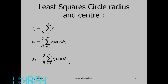The radius and center of the least squares circle are given by: r₀ = Σr_i / n; x₀ = (2/n)·Σr_i·cosθ_i; y₀ = (2/n)·Σr_i·sinθ_i. These are the equations to determine the radius of the best-fitting circle and its coordinates with respect to the roundness tester origin. x₀ is the distance from the axis of the rotary table to the center of the best-fitting circle.